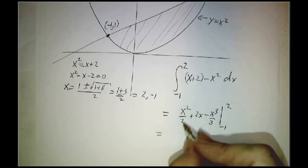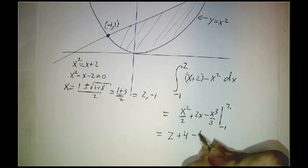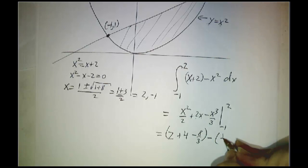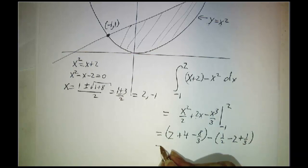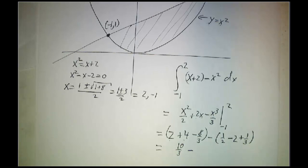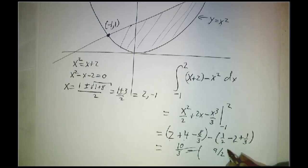That integral works out to x squared over 2 plus 2x minus x cubed over 3, evaluated at negative 1 and at 2. Plugging in 2 gives 2 plus 4 minus 8 thirds. Plugging in negative 1 gives one-half minus 2 plus one-third. Putting it all together: 6 minus 8 thirds is 18 thirds minus 8 thirds, that's 10 thirds; minus 1 third makes 9 thirds, which is 3; plus 2 makes 5; minus one-half makes 4 and a half. So the area is 9 halves.